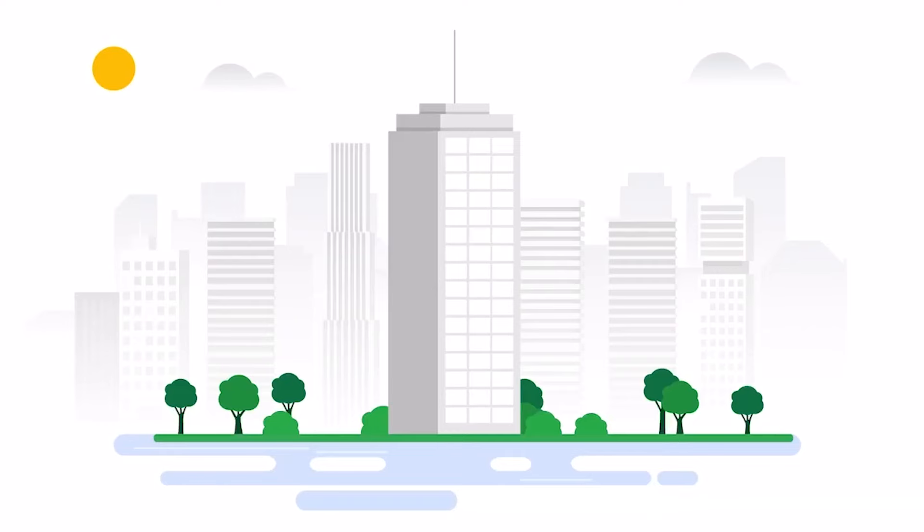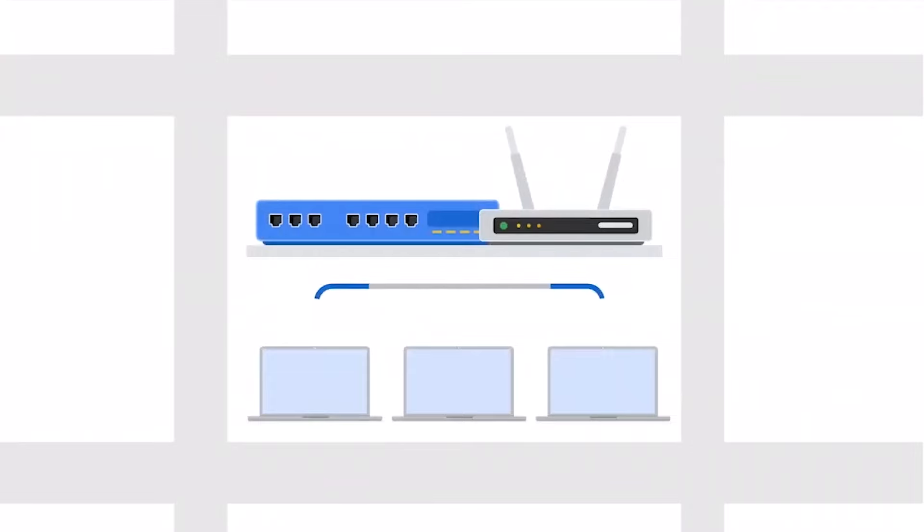Let's talk about a few different kinds of firewalls. A hardware firewall is considered the most basic way to defend against threats to a network. A hardware firewall inspects each data packet before it's allowed to enter the network.